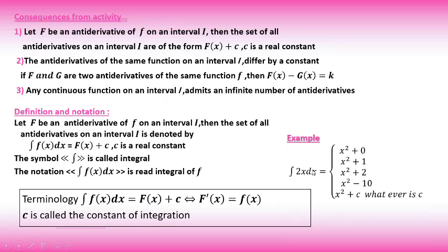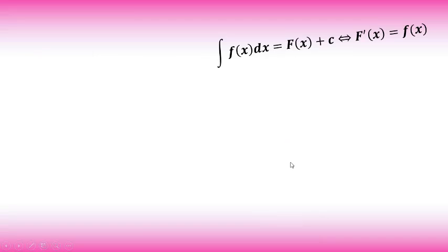Example: ∫2x dx. Someone might say x² + 2 — yes, that works, because the derivative of x² + 2 is 2x. Also x² + 1, x² − 10, x² + c — whatever c is a constant, the derivative of x² + c is just 2x. So any one of these is an antiderivative of 2x.